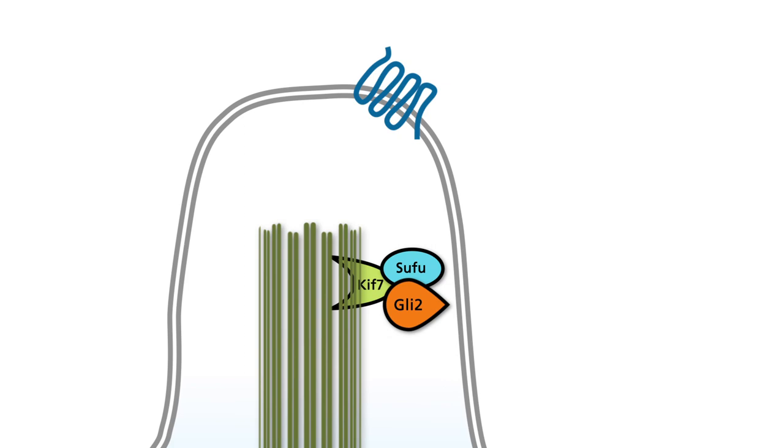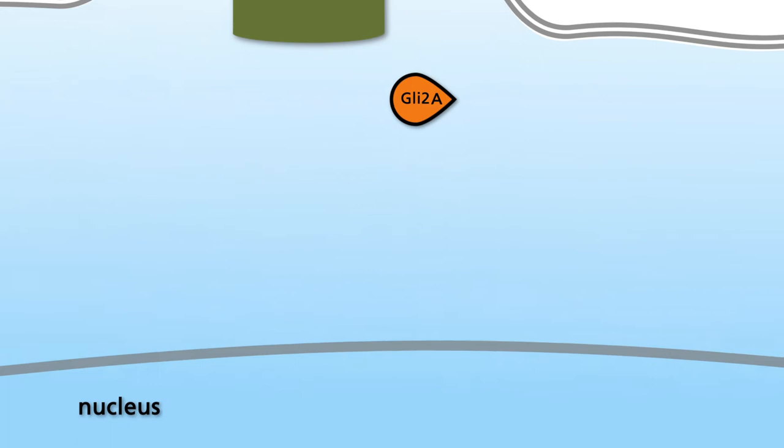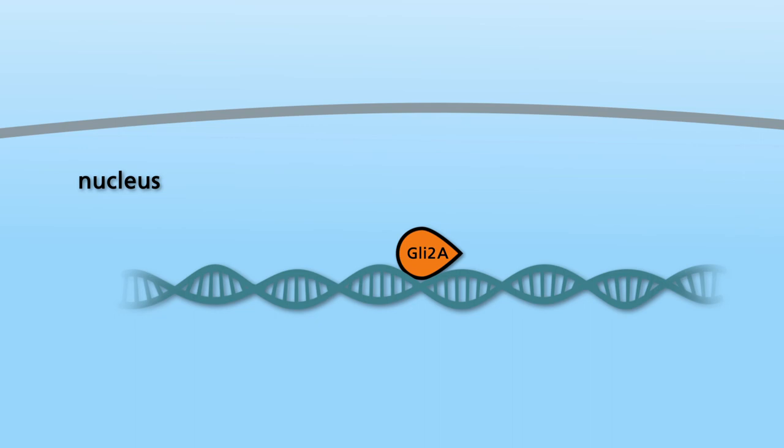GLI-2A is shown in this animation because it is the main transcriptional activator among the GLI proteins. Active GLI-2A translocates from the primary cilium into the cytoplasm and subsequently into the nucleus. After binding to the DNA, hedgehog-responsive target genes are expressed. Among them are proto-oncogenes such as MYC and cyclin-D1.